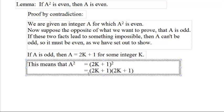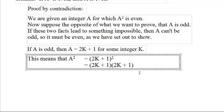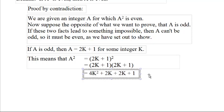What does it mean to square something? It means to multiply it by itself. And to multiply this out, you have to multiply each thing by each other thing. 2k times 2k is 4k squared. 2k times 1 is 2k. 1 times 2k is 2k. And 1 times 1 is 1.